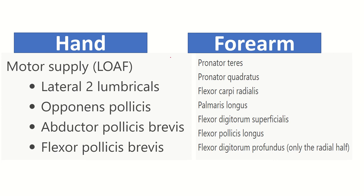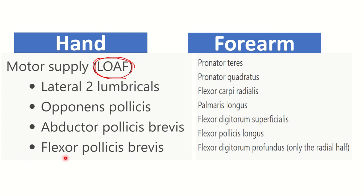Here are the muscle mnemonics for the median nerve in the hand: LOAF. L for lateral two lumbricals, O for opponens pollicis, A for abductor pollicis brevis, F for flexor pollicis brevis. So in the hand, the motor supply is: lateral two lumbricals, opponens pollicis, abductor pollicis brevis, and flexor pollicis brevis.